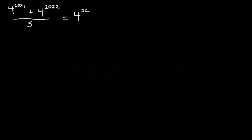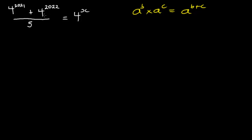So this is how we are going to start. We are going to split this step, knowing that when we have a exponent B times a exponent C, it is equal to a exponent B plus C. So from here we have four exponent 2022.